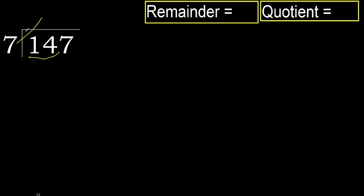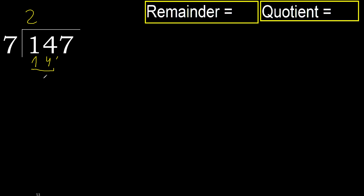7 multiplied by 3 is 21 — 21 is greater. Multiply by 2: 14. 14 is not greater. 14 minus 14 equals 0. Next.